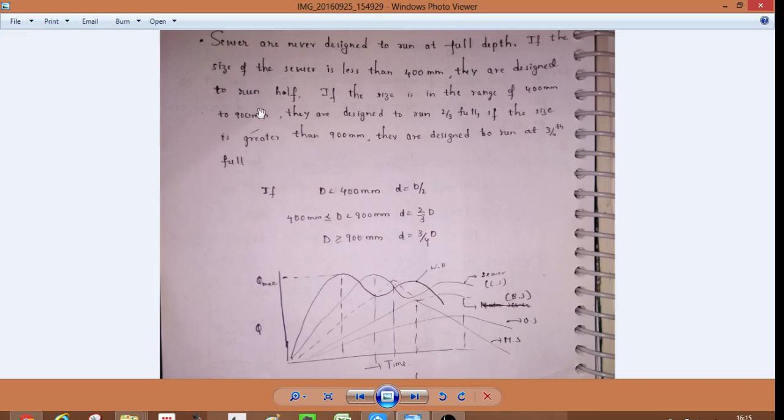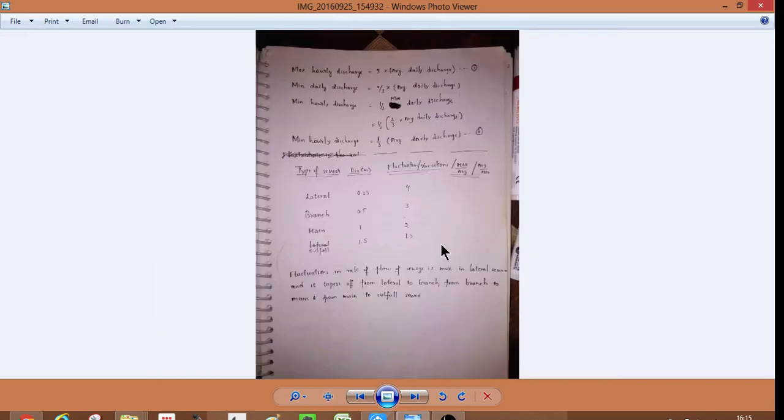If the size of sewer is less than 400, they are designed to run half full. If the size is in the range of 400 to 900, they are designed to run two-thirds full. If greater than 900, then they are designed to run three-fourths full.